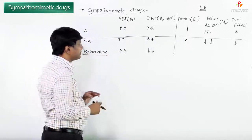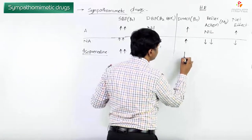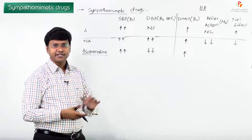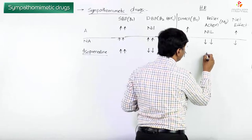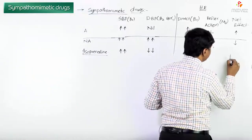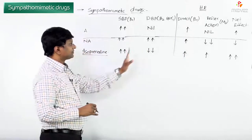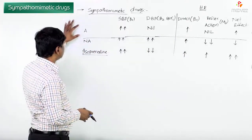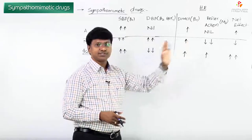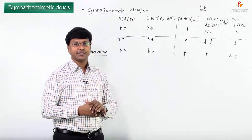For isoproterenol: it acts on beta-1 receptors increasing heart rate, and via reflex action through M2 receptors it also increases heart rate. So the net effect is an increase in heart rate. This covers the actions of adrenaline, noradrenaline, and isoproterenol on blood pressure components and heart rate.